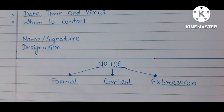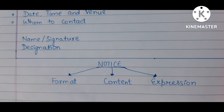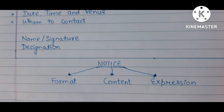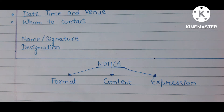In a notice, you have to focus on three things: first, format; second, content; and third, expression. Keep the format within the box, starting from the issuing authority and finishing with the designation. Focus on the content — you don't need to increase the length. Complete it in 50 to 60 words.